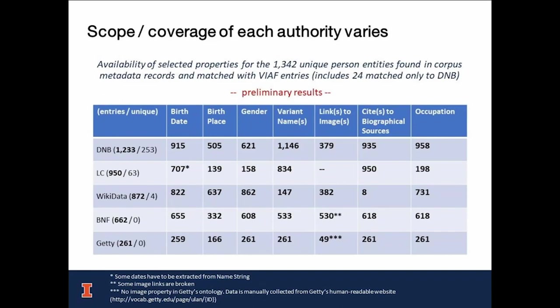To compare the scope and coverage of different authorities, we extracted DNB, LC, Wikidata, BNF, and Getty name authority links from VIAF justlinks JSON files, and counted the number of properties of interest from each entity in each authority using a Python script. If we did not have the VIAF link in Implementica metadata, we converted DNB authority links to VIAF using the WorldCat VIAF API. We found that some name entities in DNB are not available in VIAF — of all 1,342 unique person entities, 24 entities can only be matched to DNB. Properties of DNB and LC were gathered by parsing CultureGraph and LC RDF files in JSON.